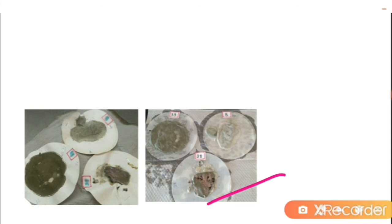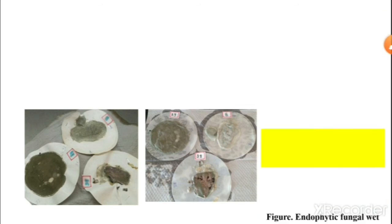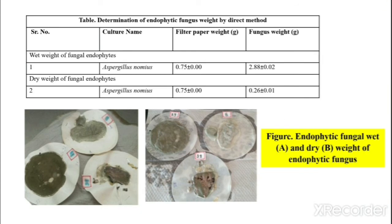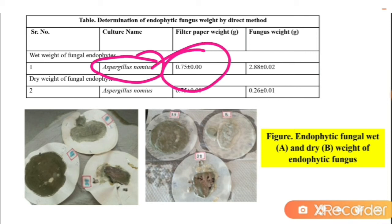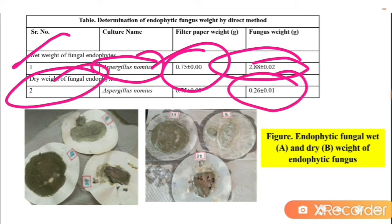Looking at the results, we can see figures showing the wet weight and the dried weight of the endophyte fungi. In the table, we can observe data for Aspergillus nomius: the filter paper weight is 75 ± 0.75, the wet weight of the endophyte fungi is 2.88 ± 0.02 grams, and the dry weight is approximately 0.26 grams, which is about 10% of the wet weight.